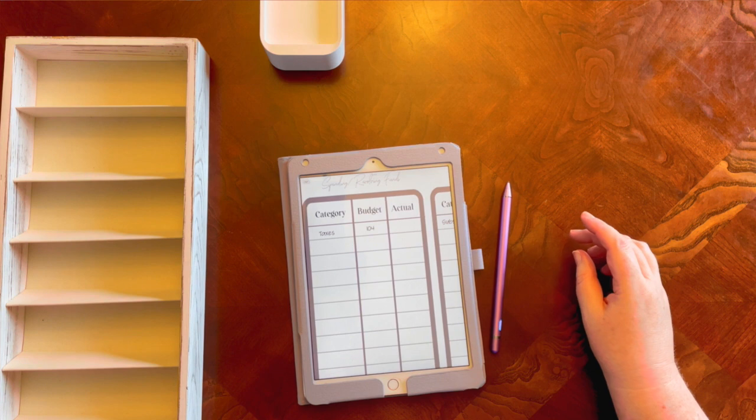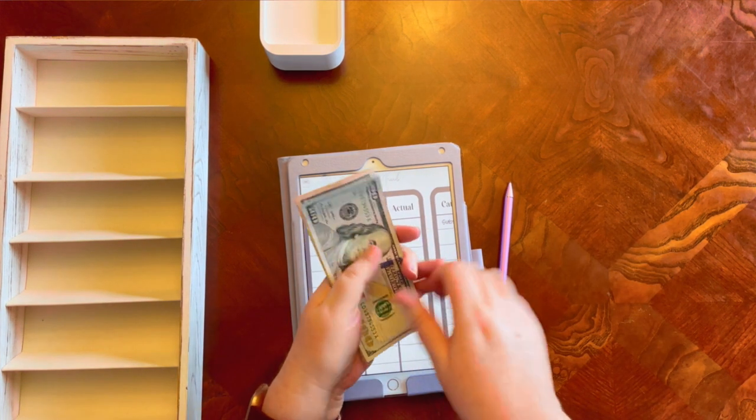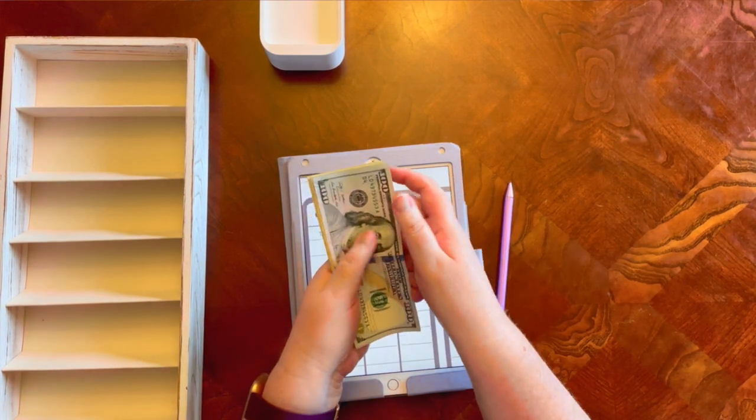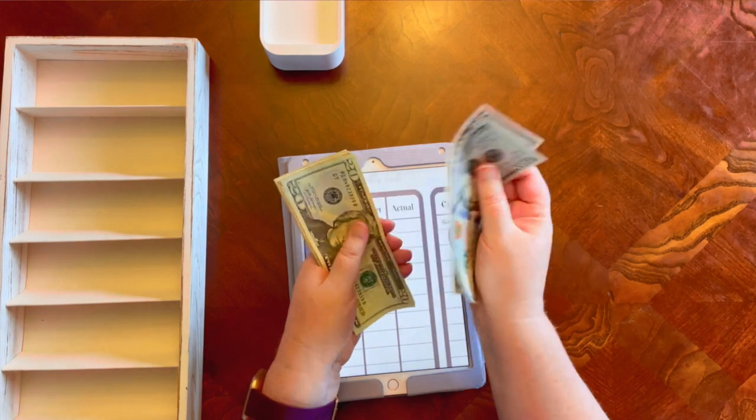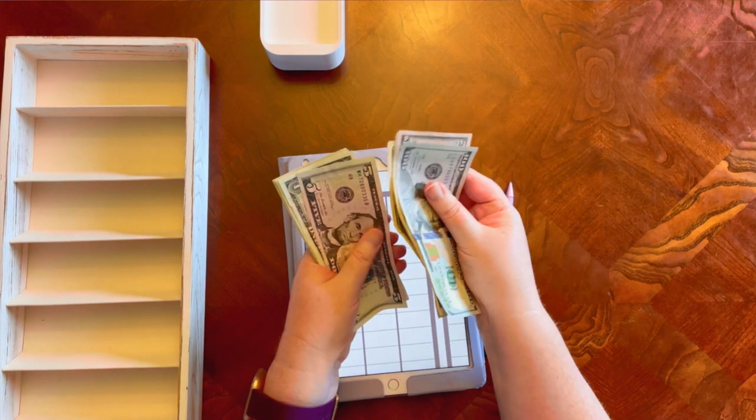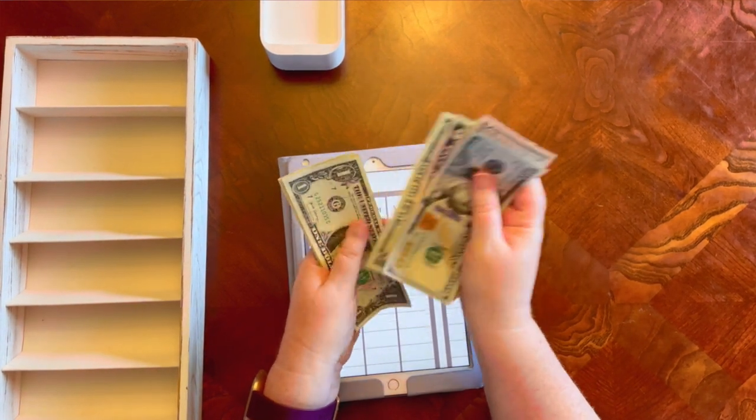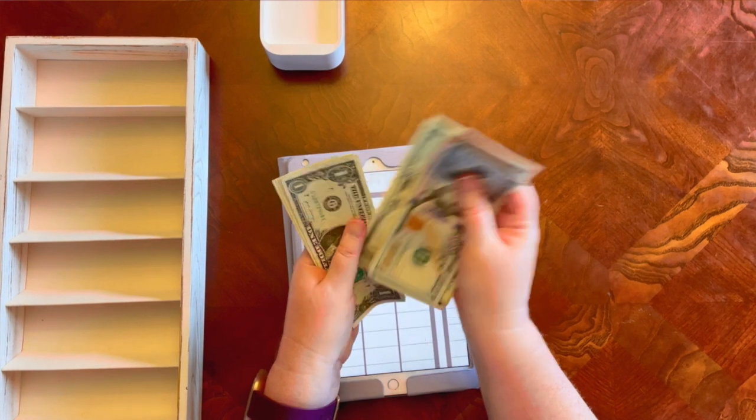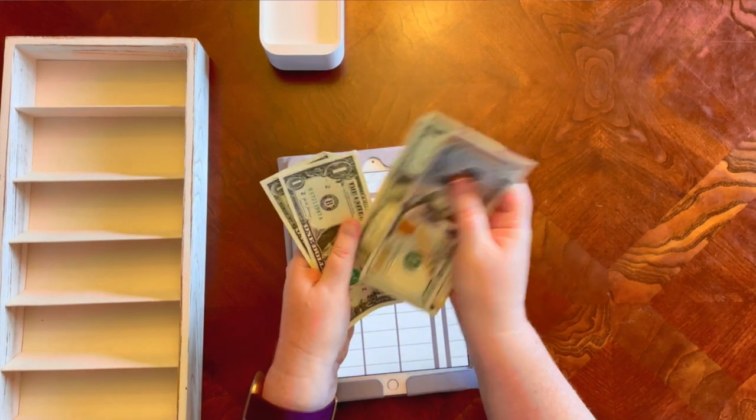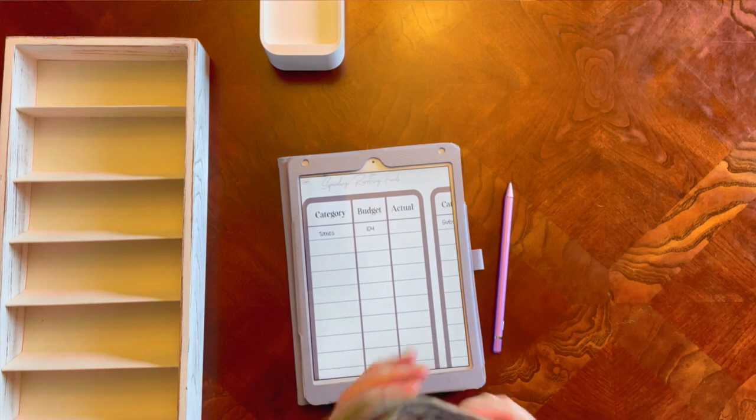So let me go ahead and first give that money a count real quick. So we have $150, $70, $80, $85, $86, $87, $88, $89, $90, $91, $92, $93. So $193.